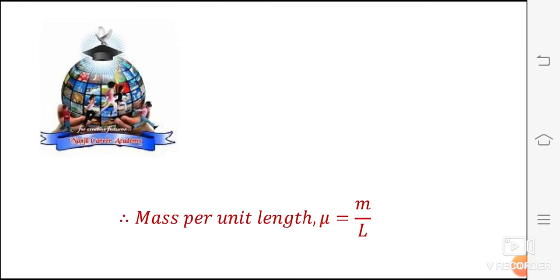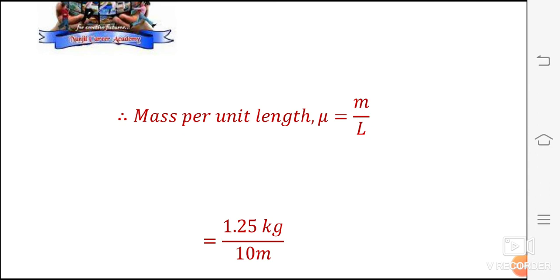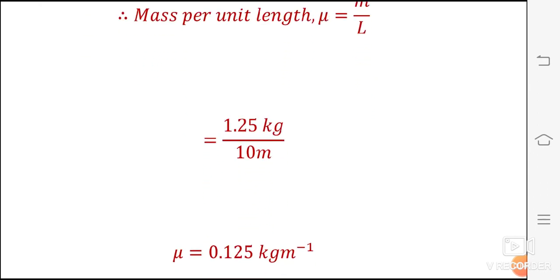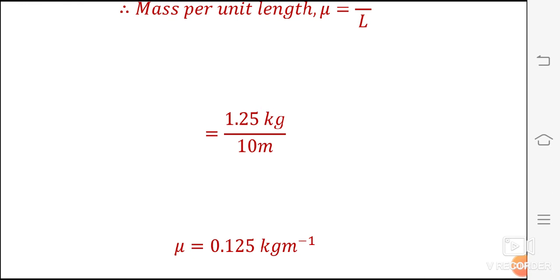So mass per unit length μ is equal to mass divided by length, is equal to 1.25 kg divided by 10 meter. So μ is equal to mass per unit length, μ is equal to 0.125 kg per meter.